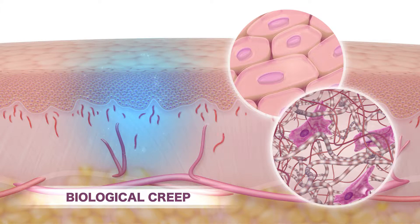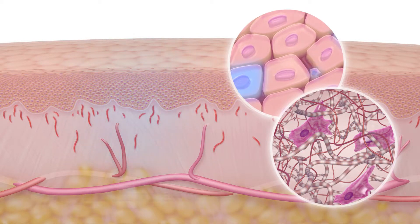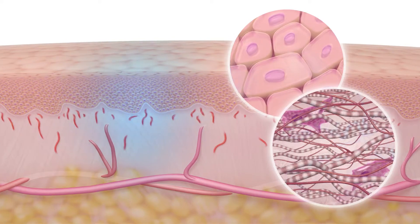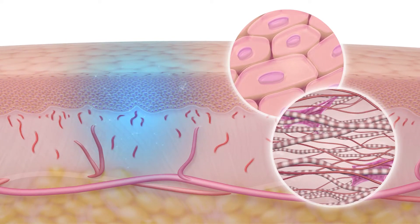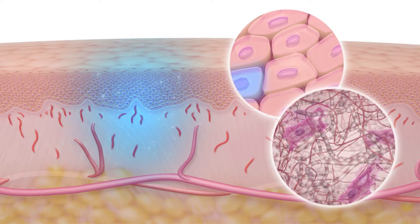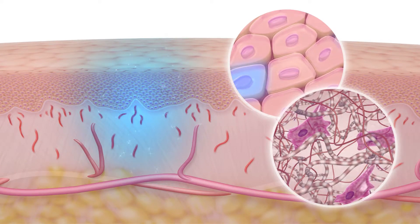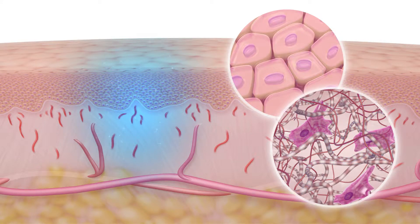Vascularity is increased and new skin cells are created. Mechanical stretch and biological creep act together to expand skin to almost limitless proportions. This mechanism of tissue generation occurs naturally every day.